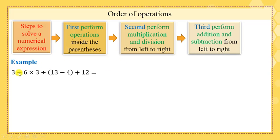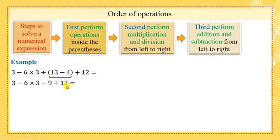Example — let's apply these steps. We start with parentheses. Inside the parentheses we have 13 − 4. Then we copy 3 − 6 × 3 ÷ (13 − 4) + 12. 13 − 4 = 9. No more parentheses, so we go to step 2: multiplication and division from left to right. From the left, we have multiplication: negative 6 × 3 = negative 18. Then negative 18 ÷ 9 = negative 2.